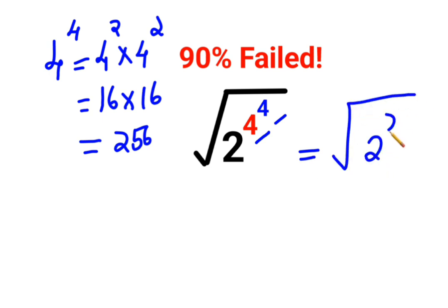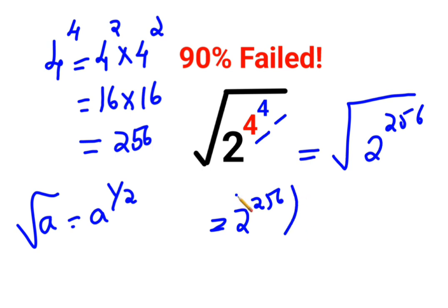Now remember that root of any value can also be written as a raised to 1 upon 2. So this is basically coming out to be 2 raised to 256 the whole raised to half.